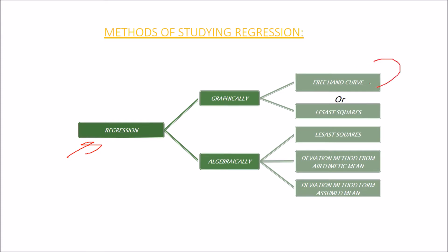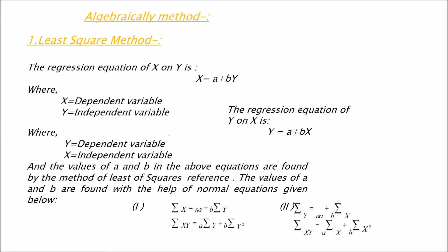There are certain methods of dealing with regression. First is graphically, you can use the freehand curve or least squares. Algebraically, you can use least squares, deviation from arithmetic mean, and deviation from assumed mean. So these three we are going to see.